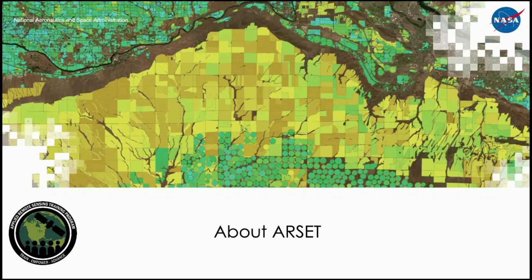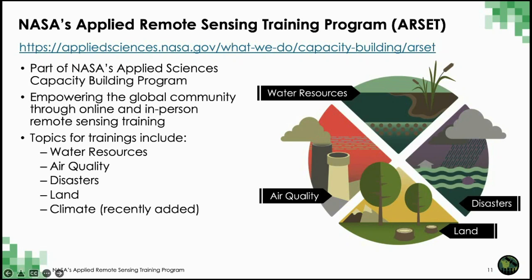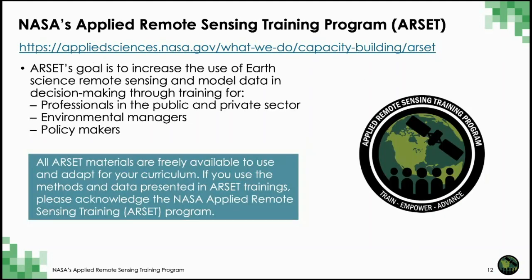The Applied Remote Sensing Training Program, or ARSET, is part of NASA's Applied Sciences Capacity Building Program. For more than 10 years, ARSET has been empowering the global community through online and in-person remote sensing training in thematic areas including water resources, air quality, disasters, land, and climate. ARSET's goal is to increase the use of remote sensing and earth science modeling data in decision making for professionals in the public and private sector, environmental managers, and policy makers. All ARSET training materials are freely available.